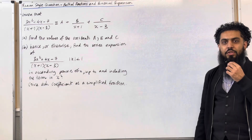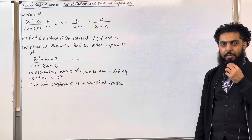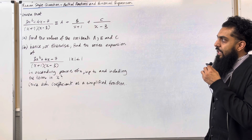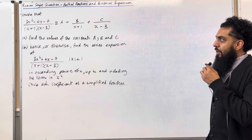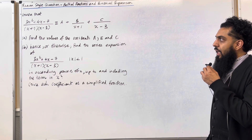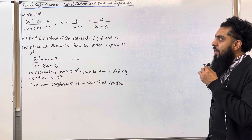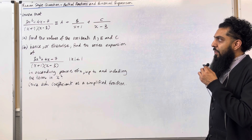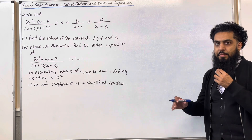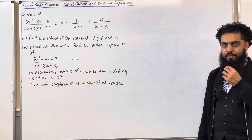Here is an exam question on partial fractions and binomial expansion. Given that 3x squared plus 4x minus 7 over (x plus 1)(x minus 3) is identical to A plus B over (x plus 1) plus C over (x minus 3). Part A: find the values of the constants A, B, and C. Please pause the video, have a go at part A, and then play the video.